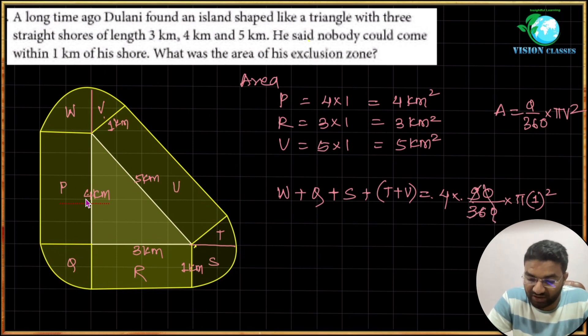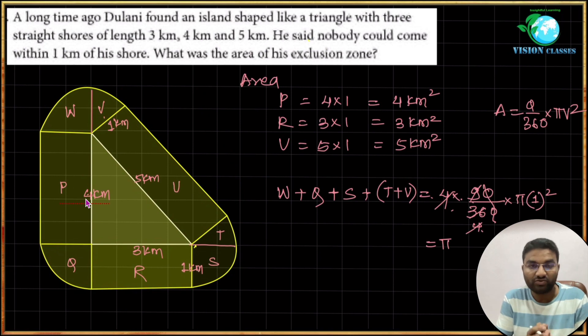This formula we have to use. So θ by 360 times π times radius is 1 kilometer, so we will use r as 1 squared. So here 9 times 4 is 36, this 4 and 4 get cancelled out, and we're left with just π as the area of these four quarters.